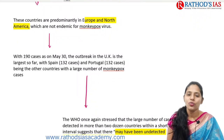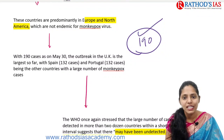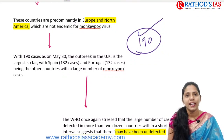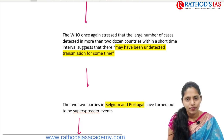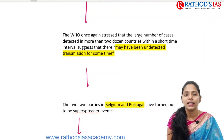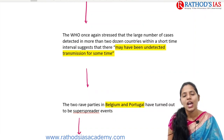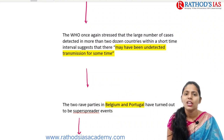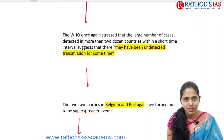Spain, Portugal, and other countries also reported large numbers of monkeypox cases. The WHO stressed that large numbers of cases were detected in more than two dozen countries within a very short time span. The WHO also had concerns about whether there had been any undetected transmission happening for some time.